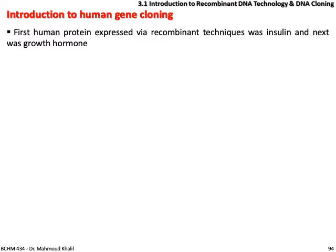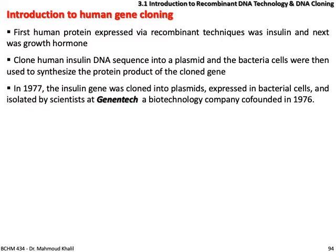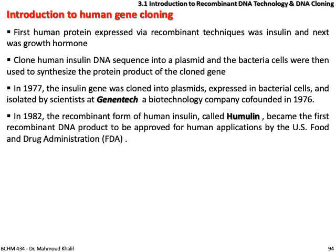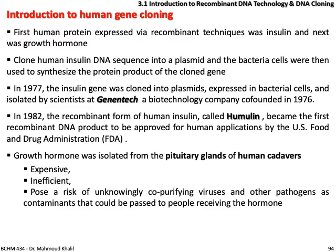Introduction to human gene cloning: the first human protein expressed via recombinant technique was insulin, followed by growth hormone. The human insulin DNA sequence was cloned into a plasmid and bacterial cells were used to synthesize the protein of interest. In 1977, the insulin gene was cloned into a plasmid and expressed in bacterial cells, isolated by scientists at Genentech, the first biotechnology company co-founded in 1976. In 1982, the recombinant form of human insulin, called Humulin, became the first recombinant DNA product approved for human use by the FDA. Growth hormone was previously isolated from pituitary glands of human cadavers — very expensive, inefficient, and posed risk of co-purifying viruses and other pathogens.